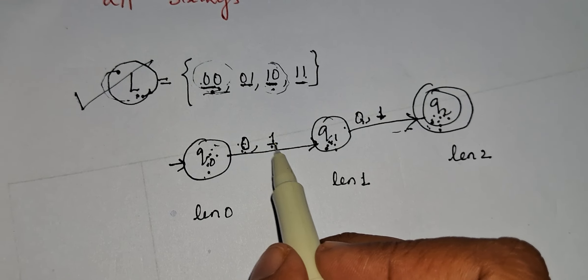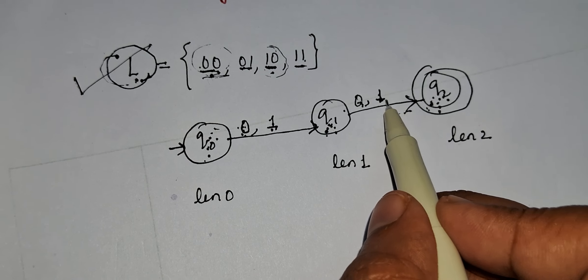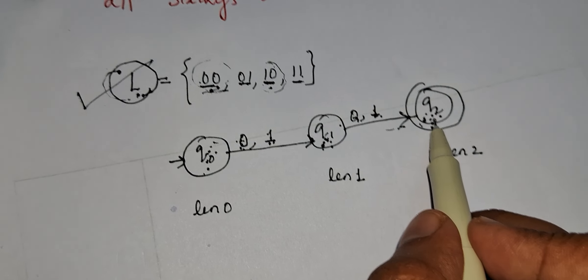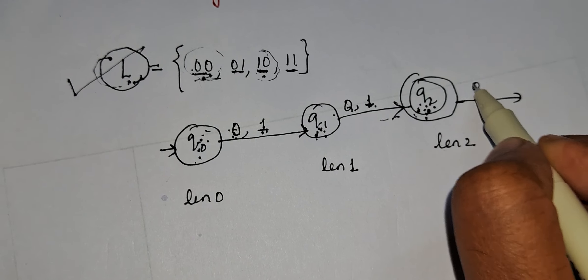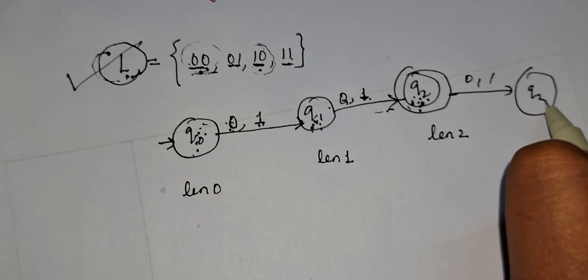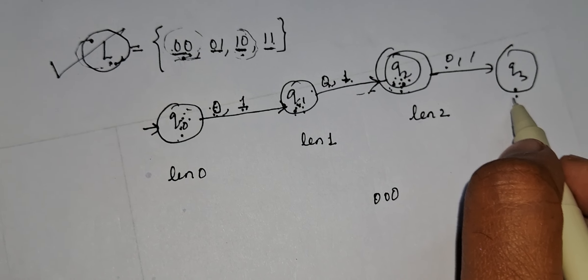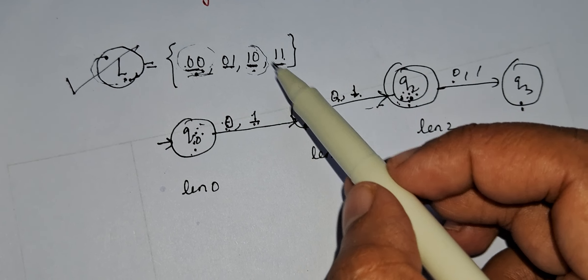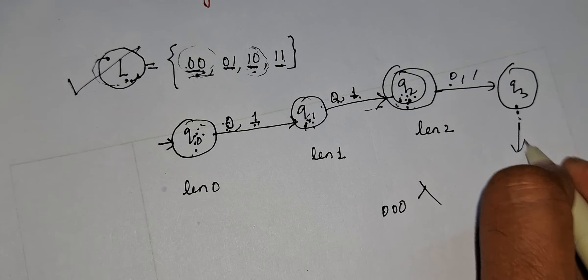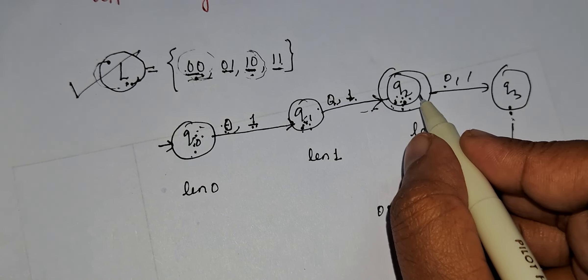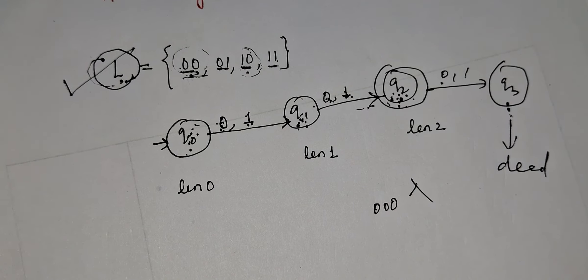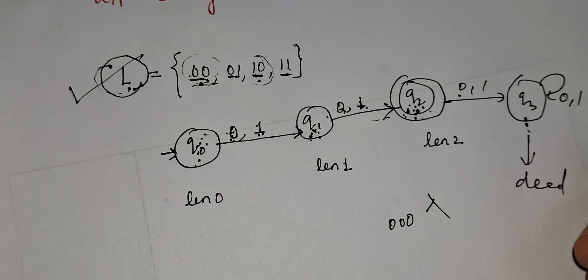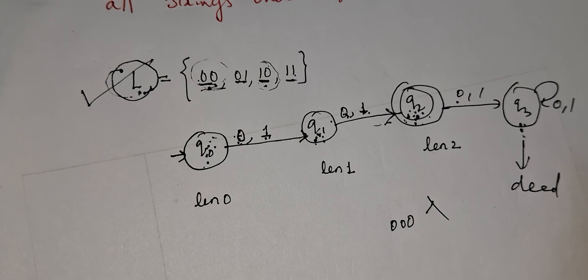Check that transitions are shown on all input symbols for every state. q0 and q1 have transitions on 0 and 1, but q2 does not yet. For strings longer than length 2 — say 000 — we move to a dead state q3, which is not a final state, so 000 is rejected. From a dead state you cannot reach the final state. You must show transitions on all input symbols for every state.